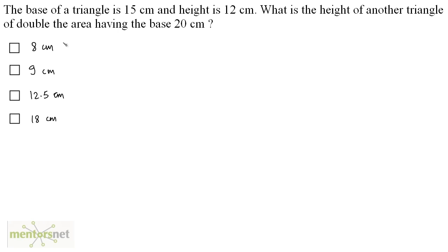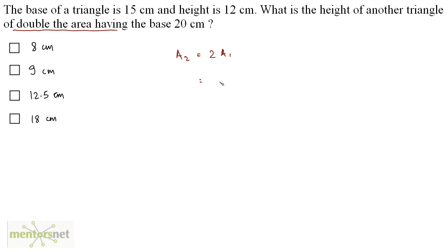The base of a triangle is 15 centimeters and height is 12 centimeters. What is the height of another triangle of double the area having the base as 20 centimeters? We have been given that the area of the second triangle is double the area of the first, so A2 equals twice of A1.